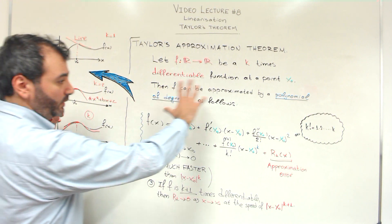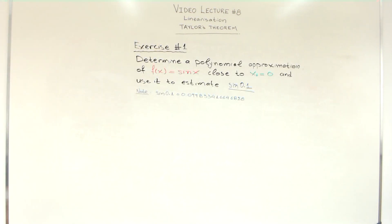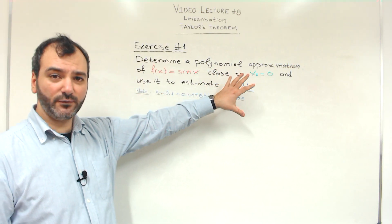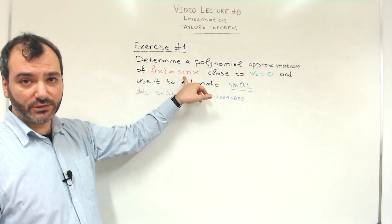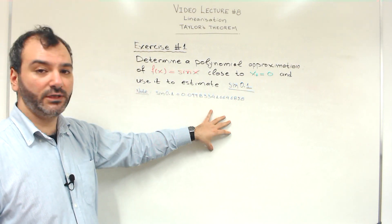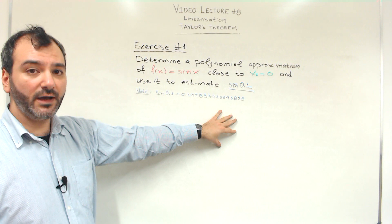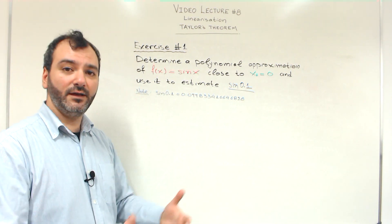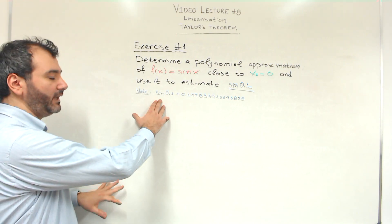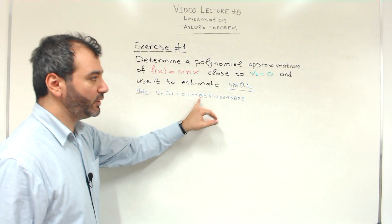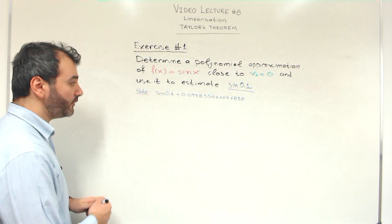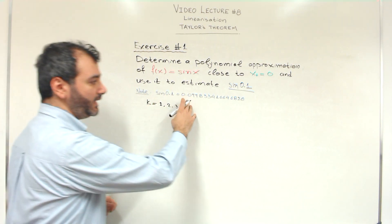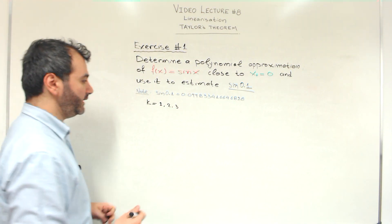This is a very nice exercise. Not only will we use Taylor's approximation theorem to find a polynomial approximation of a trigonometric function close to a given point, but also there is an interesting application: we will use this theorem to derive an estimate of sine of 0.1 without using a calculator. Using a calculator just to verify, I calculated that sine of 0.1 is given by a specific number. Let's see using Taylor's approximation theorem up to k equals 3, doing k equals 1, 2, and 3.